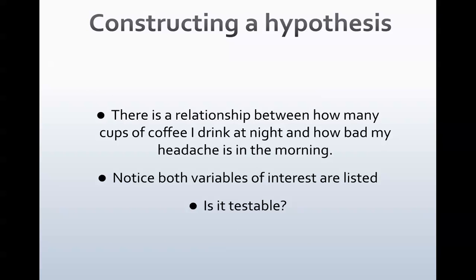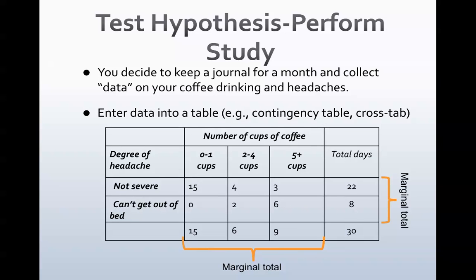Constructing your hypothesis is the relationship between how many cups of coffee I drink at night and how bad my headache is in the morning. Some people get headaches when they drink coffee—I am one of them, although it doesn't stop me from drinking it. You want to notice that in the hypothesis I constructed, I have both variables: the exposure variable, which is drinking coffee, and my headaches, which is my outcome. And it absolutely is testable. So in order to do this, I've decided to keep a journal for a month and collected data on my coffee drinking and headaches.